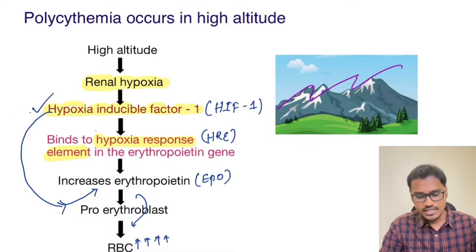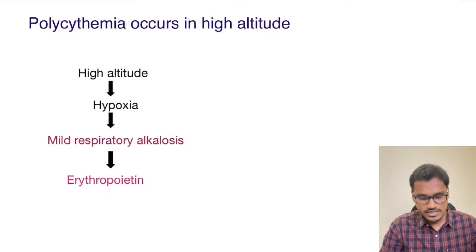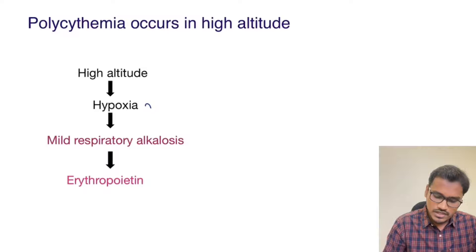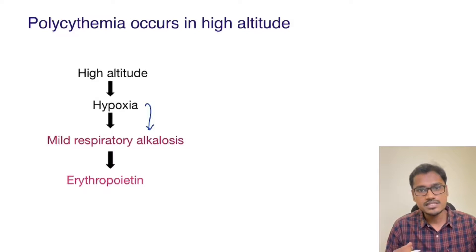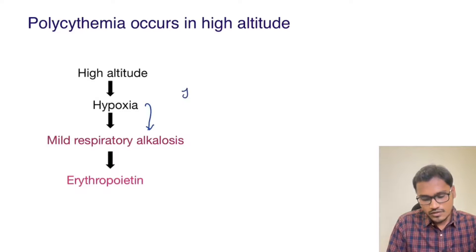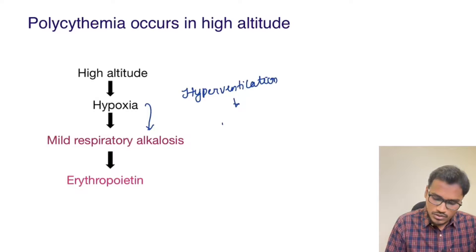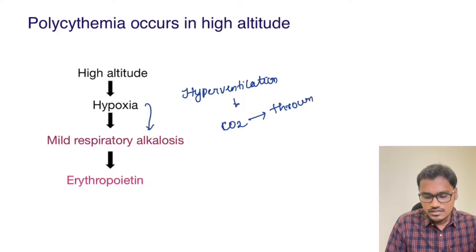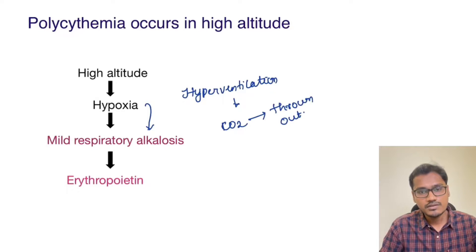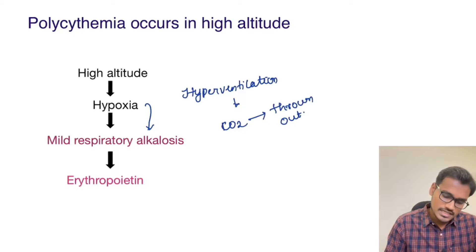There is one another reason also contributing to polycythemia, but it is a minor reason. Hypoxia causes respiratory alkalosis — whenever a person is hypoxic, they go into hyperventilation. When hyperventilation happens, more and more CO2 is expelled out, leading to mild respiratory alkalosis.